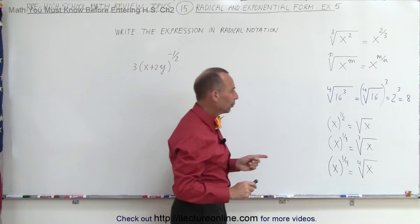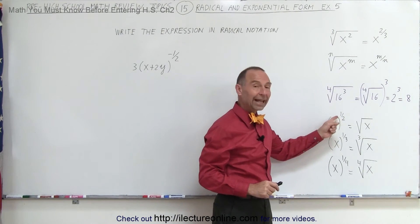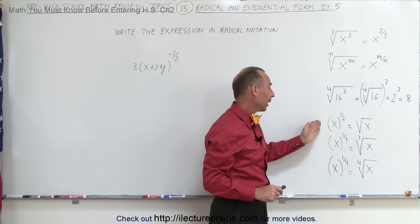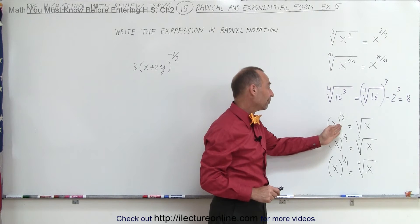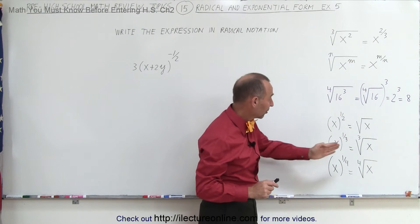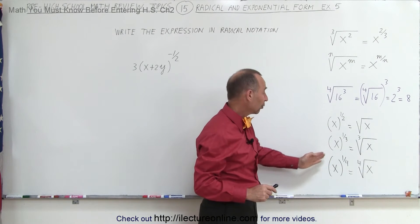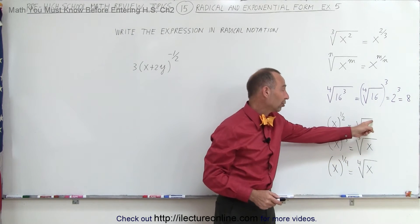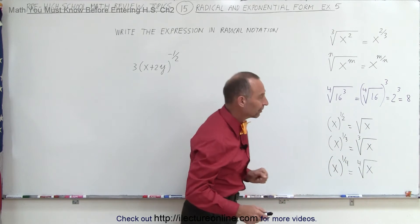When we do that, realize that whenever we have an exponent that has a 1 in the numerator and something else in the denominator, we can simply write it like this: x to the 1 half power is simply the square root of x, x to the 1 third power is simply the cube root of x, and x to the 1 fourth power is simply the fourth root of x. We don't have to write x to the 1 first power inside the radical.